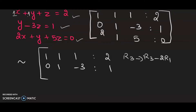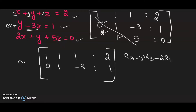First, write the equations as an augmented matrix. The coefficients of x, y, z for the first equation are 1, 1, 1 and the constant is 2. There is no x in the second equation, so I write 0; the coefficients are 0, 1, −3 and the constant is 1. The last equation gives coefficients 2, 1, 5 with constant 0. As per Gauss elimination, we need to make the elements below the diagonal equal to zero.